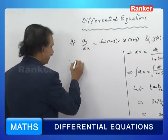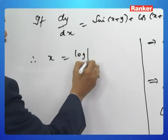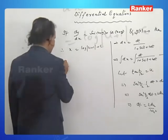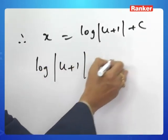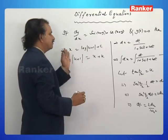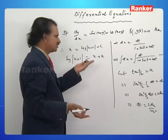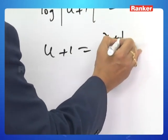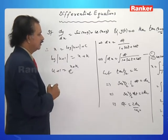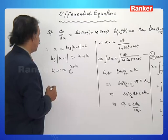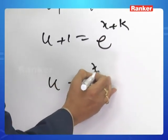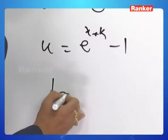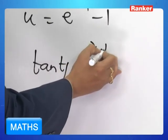From the last step, we have x equals log|u+1| plus c, or equivalently log|u+1| equals x plus k where k is a constant. Therefore u+1 equals e^(x+k), and u equals e^(x+k) minus 1. Substituting back, tan(t/2) equals e^(x+k) minus 1, and since t equals x+y, tan((x+y)/2) equals e^(x+k) minus 1.